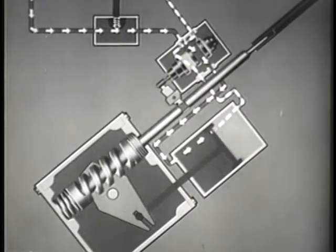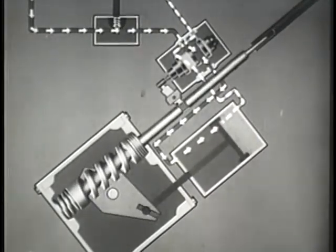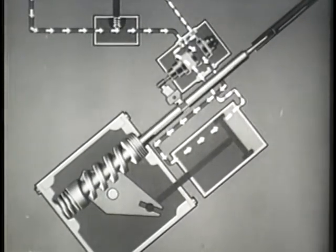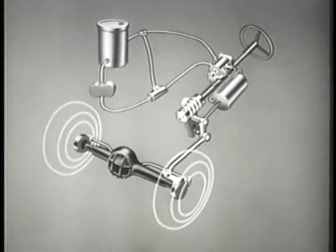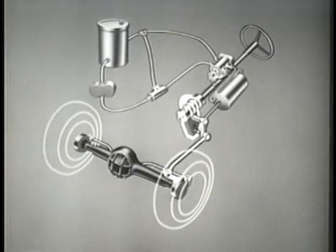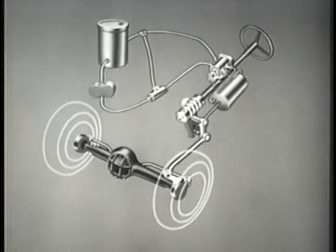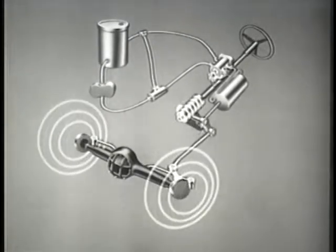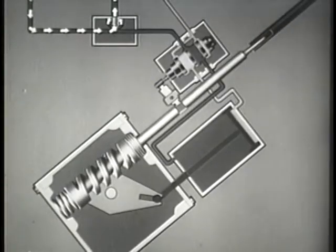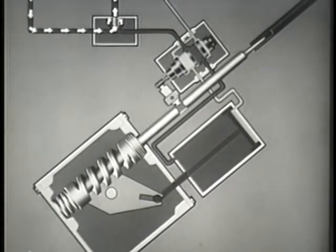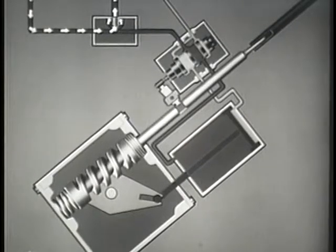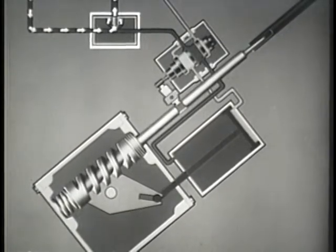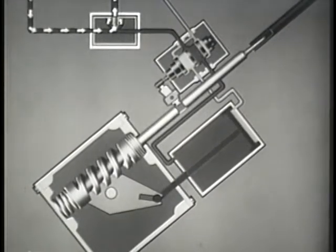The pressure differential in the power cylinder moves the piston and piston rod, thus applying a mechanical force to the pitman arm shaft lever, turning the wheels in the desired direction. When the piston reaches the end of travel in the power cylinder, the pump continues to deliver fluid, causing an increase in operating pressure. The relief valve provides an escape for this excess pressure back to the reservoir.